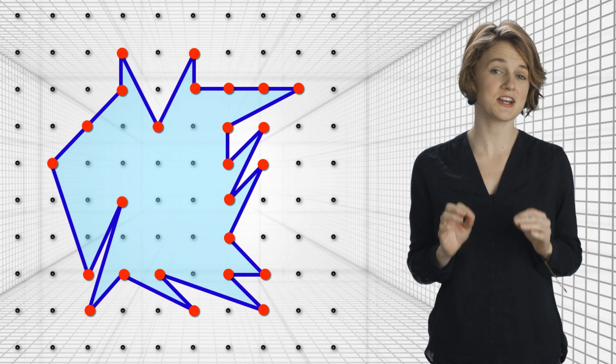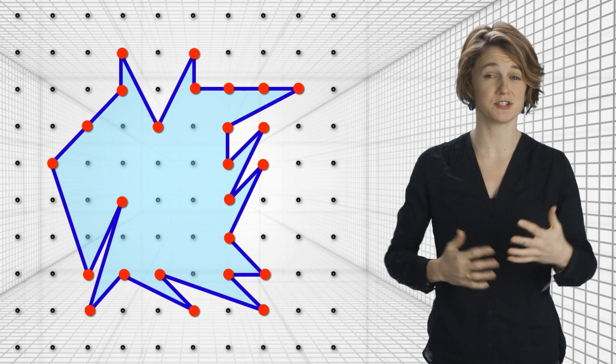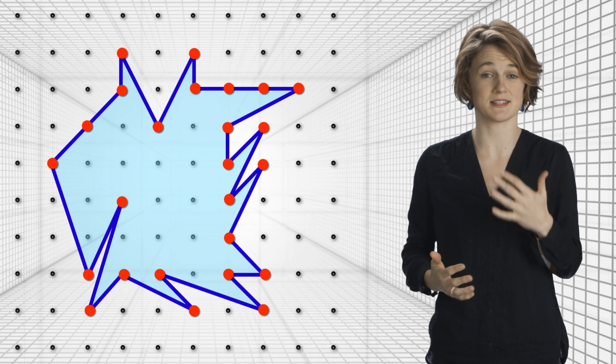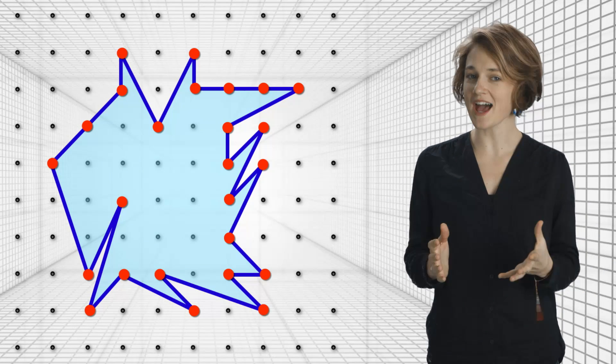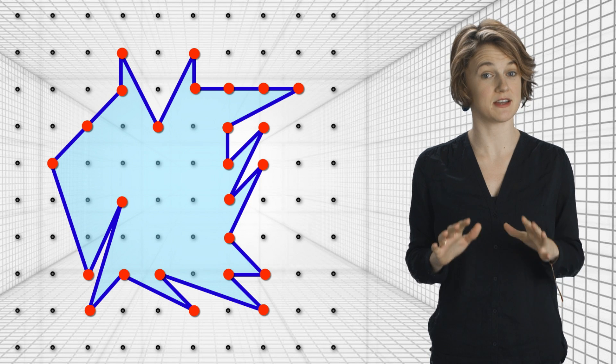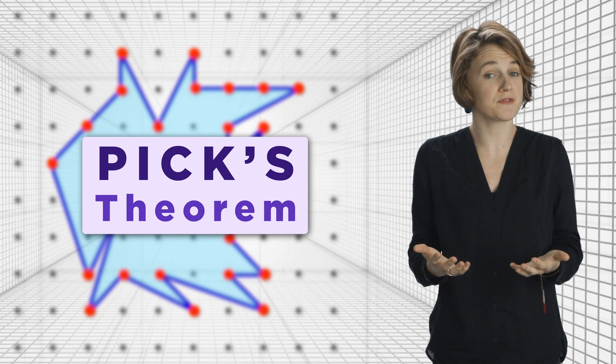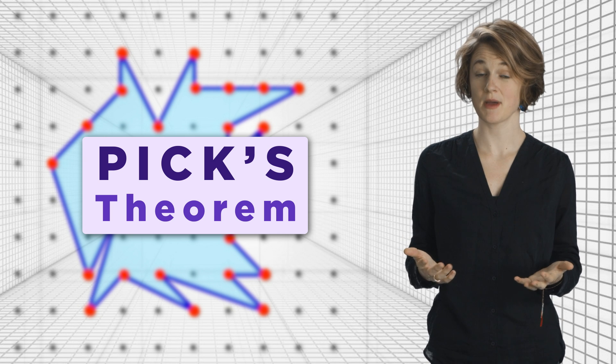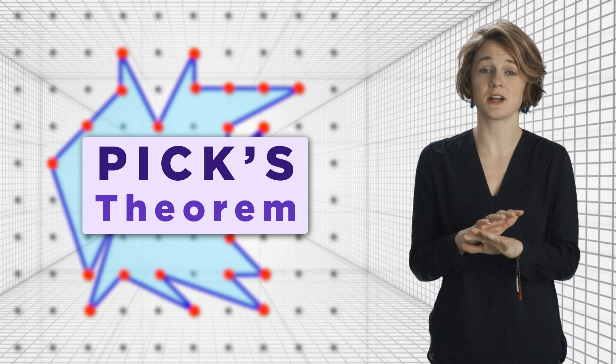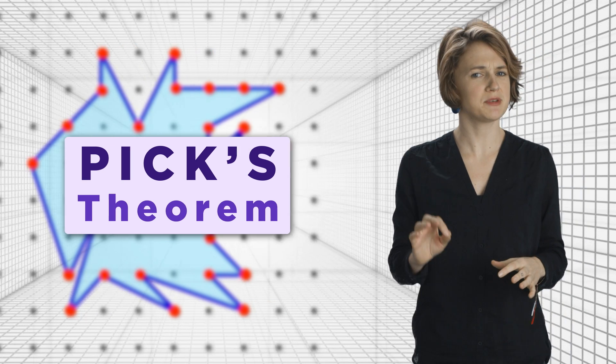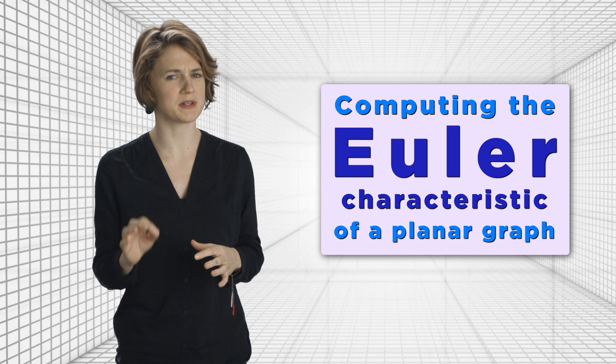To find the area of this shape, it might seem like you have to do a bunch of trigonometry and lots of computations. But there's actually a simple formula for the area of this shape given by Pick's theorem. And the proof of that formula is quite elegant. But to get there, we have to start somewhere entirely different by computing the Euler characteristic of a planar graph.